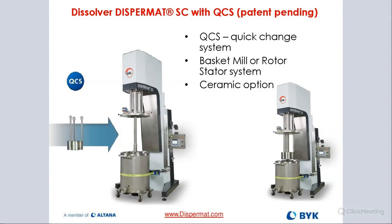We also offer ceramic options with our basket mills. If you're running materials that are very color sensitive, milling is very abrasive. With a stainless steel basket mill, there is a high probability that the media will wear down the milling chamber and cause discoloration — for example, a beautiful white material could turn gray from metal bleeding during milling. So we offer ceramic options: zirconium oxide or silicon carbide, which is more abrasion resistant, to protect your product from discoloration.